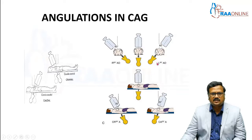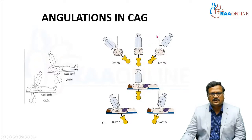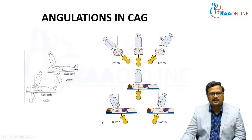Imagine the patient is sitting here. If the x-ray tube is straight over the patient it is called AP. If the tube is tilted to the left side it is called LAO — the common angle used is 40 degrees. If it is tilted towards the patient's right side it is called RAO: right anterior oblique and left anterior oblique.